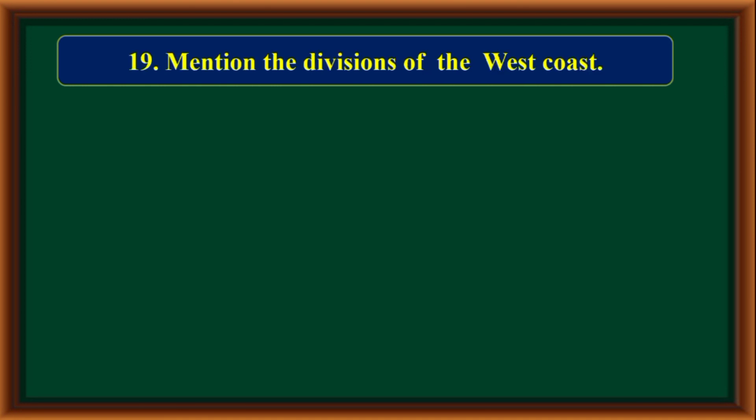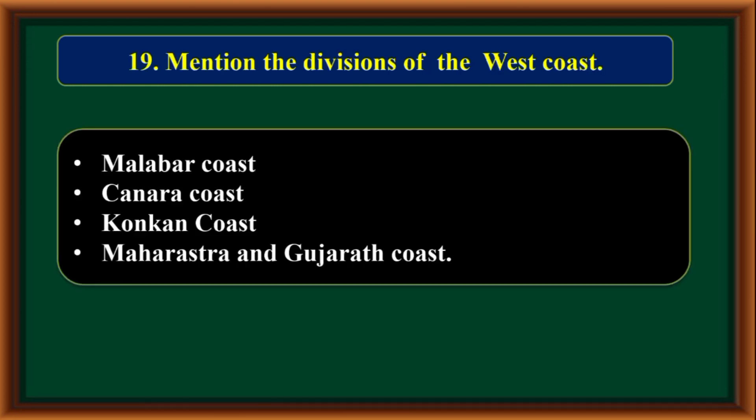Mention the divisions of the west coast: Malabar coast, Konkan coast, Maharashtra coast, and Gujarat coast.